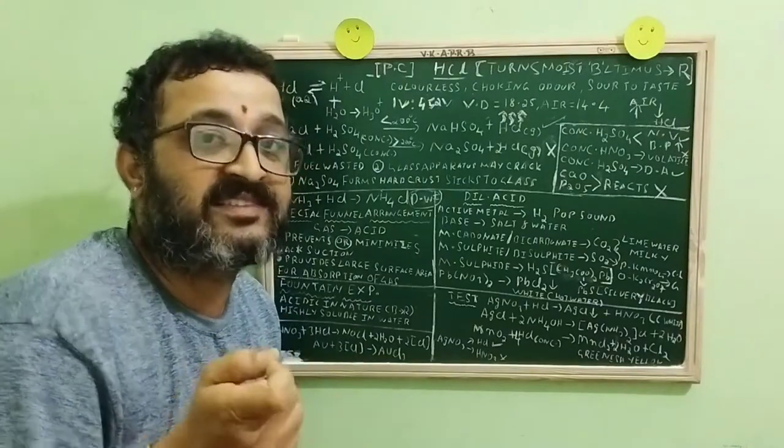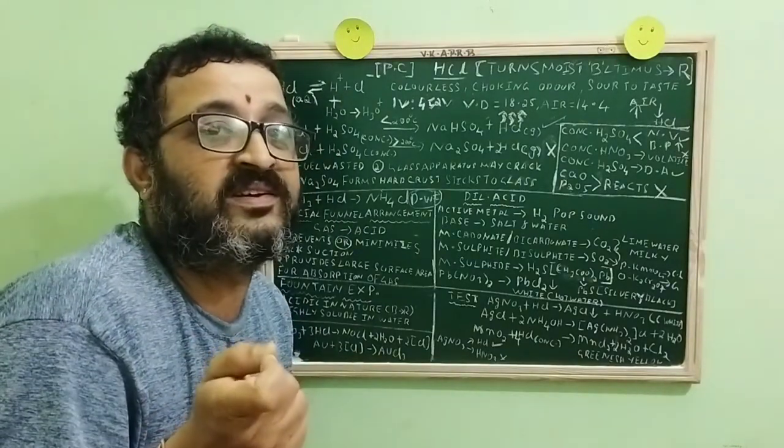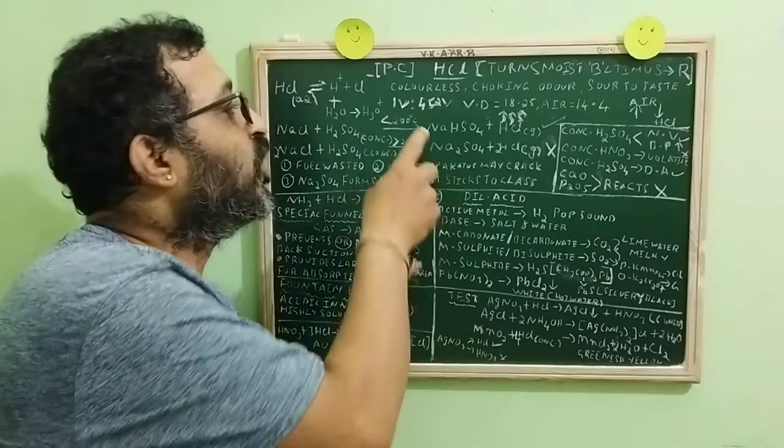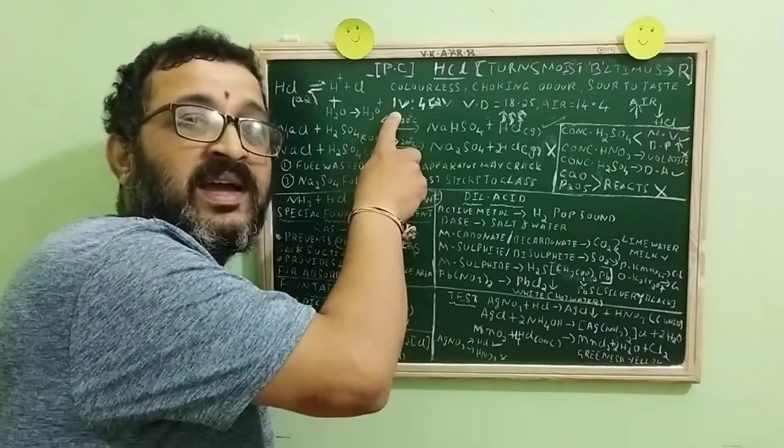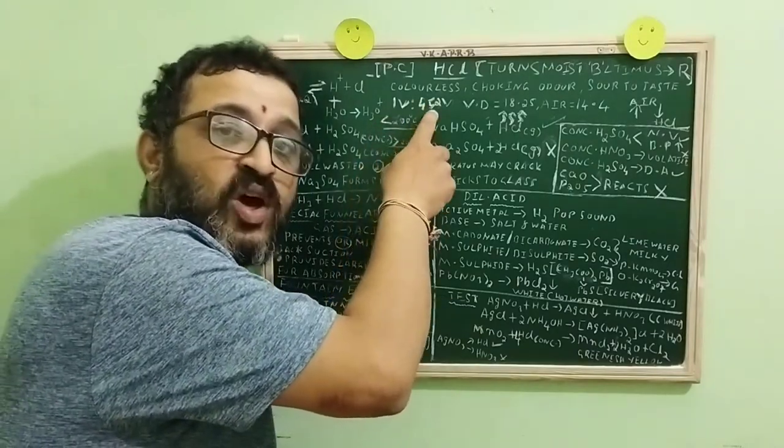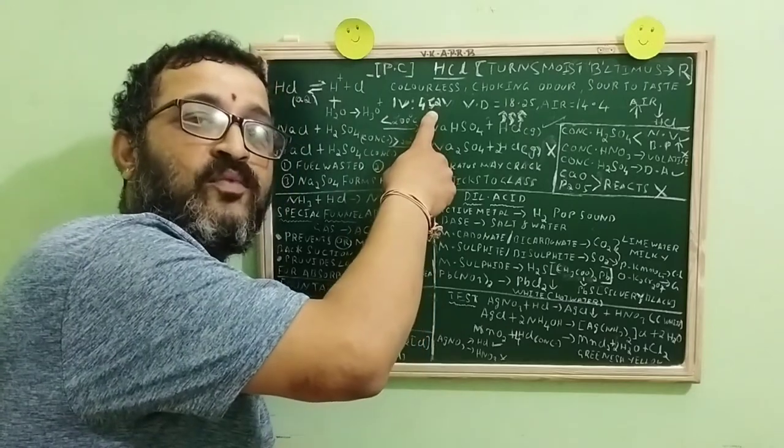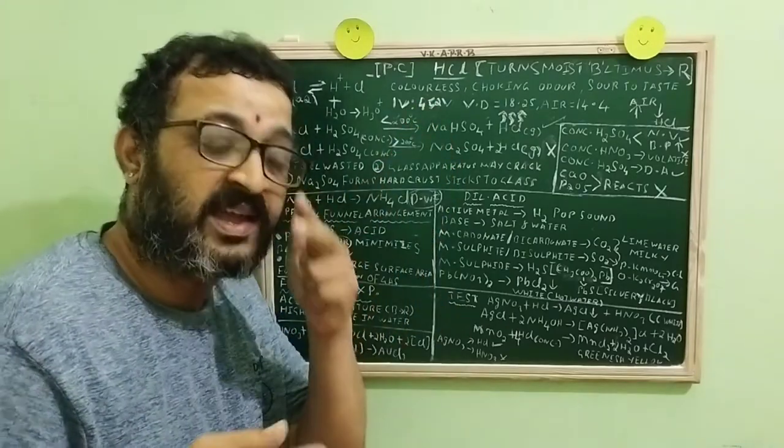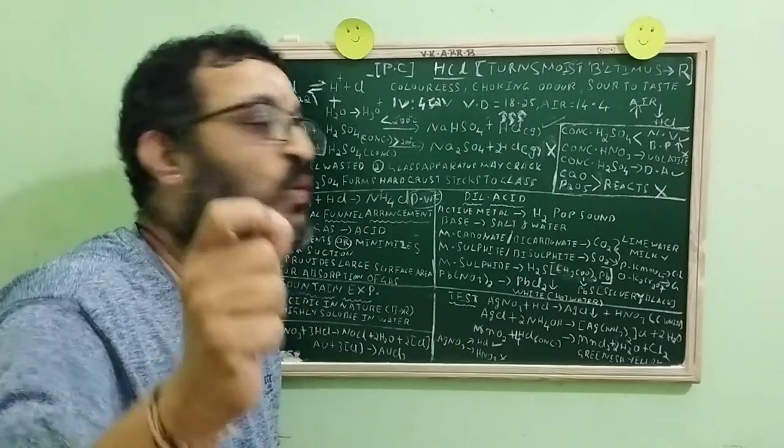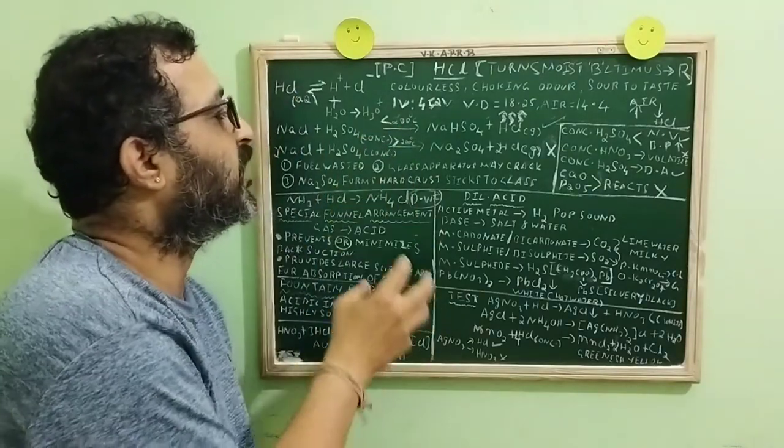We all know that acids are highly soluble in water. Even HCl is highly soluble in water. One volume of water can dissolve 452 volumes of acid. That's why HCl is not collected over water.